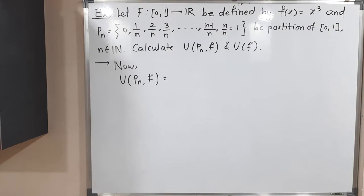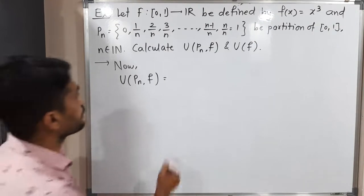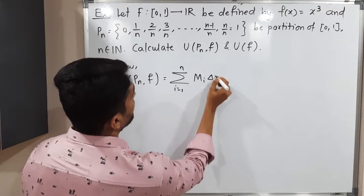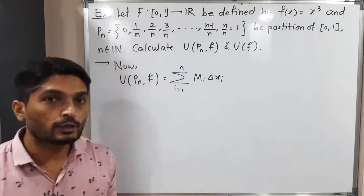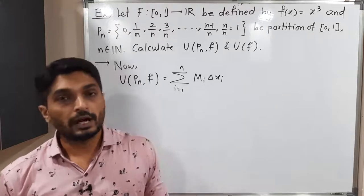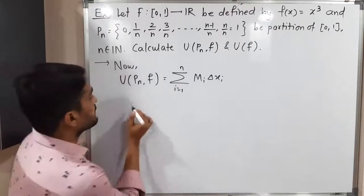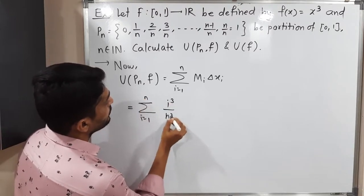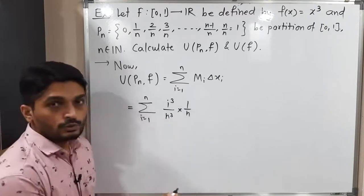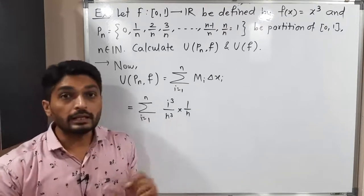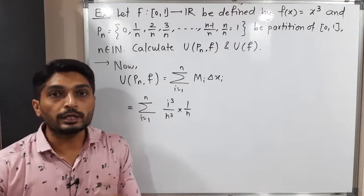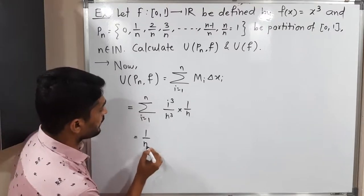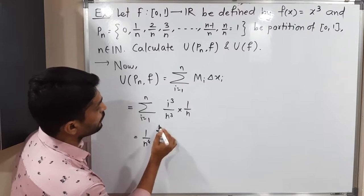Now let us calculate the upper sum U(P_n). The formula is U(P_n) = Σ (i=1 to n) M_i · Δx_i. Substituting M_i = i³/n³ and Δx_i = 1/n, we get Σ (i³/n³) · (1/n). Since n is independent of i, we can take 1/n⁴ outside the summation, giving (1/n⁴) · Σ (i=1 to n) i³.